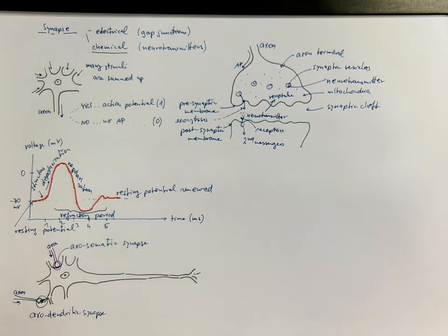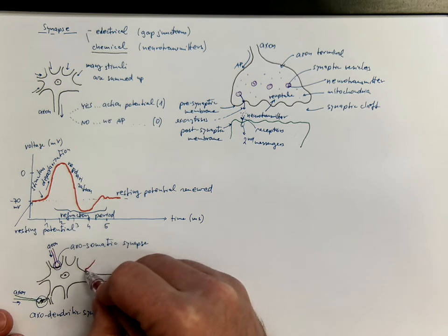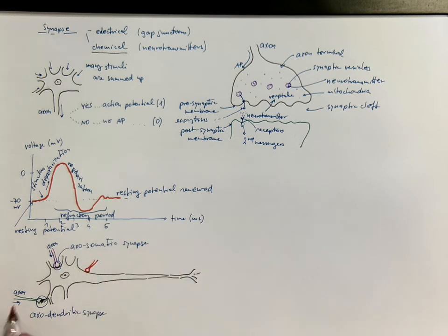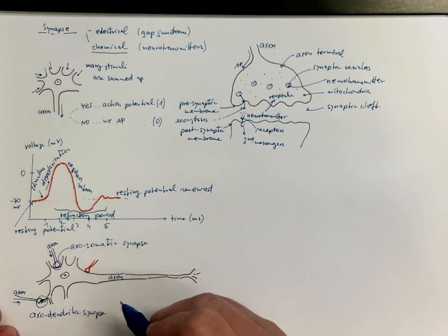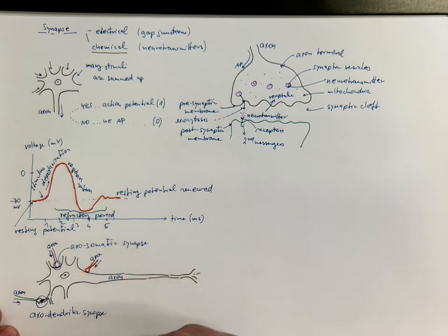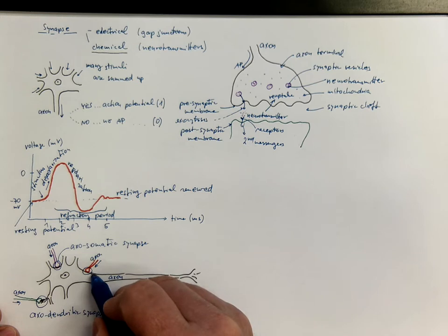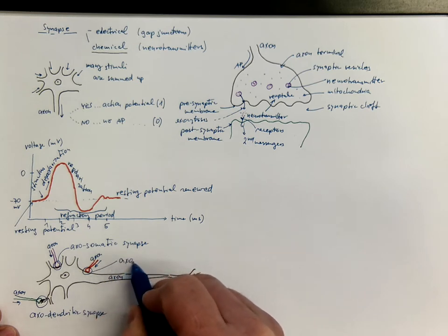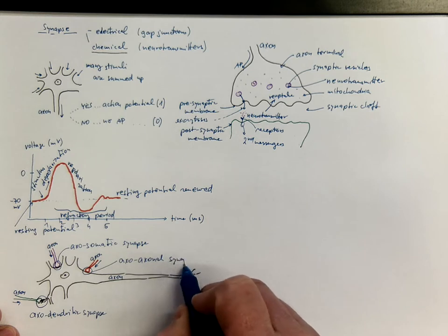Another option is that an axon synapses with another axon, especially at the initial segment which is without myelin — this would be called an axoaxonic synapse.